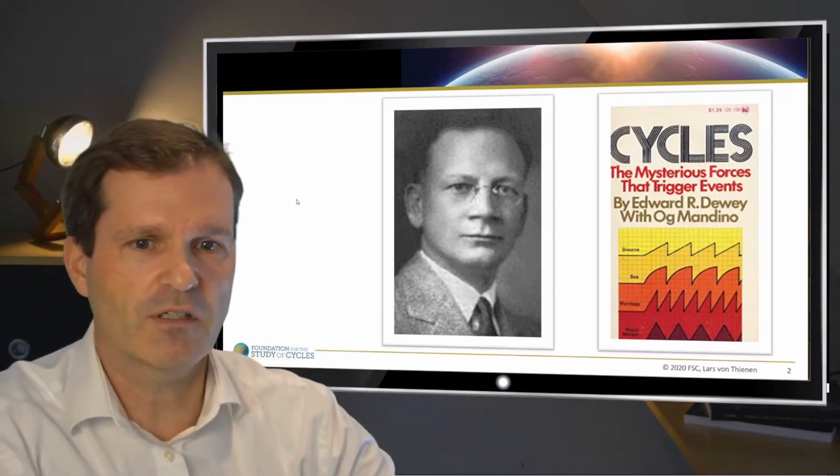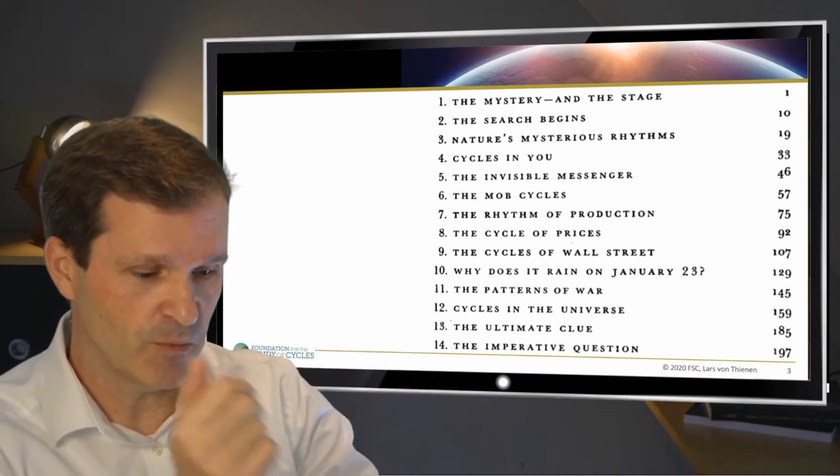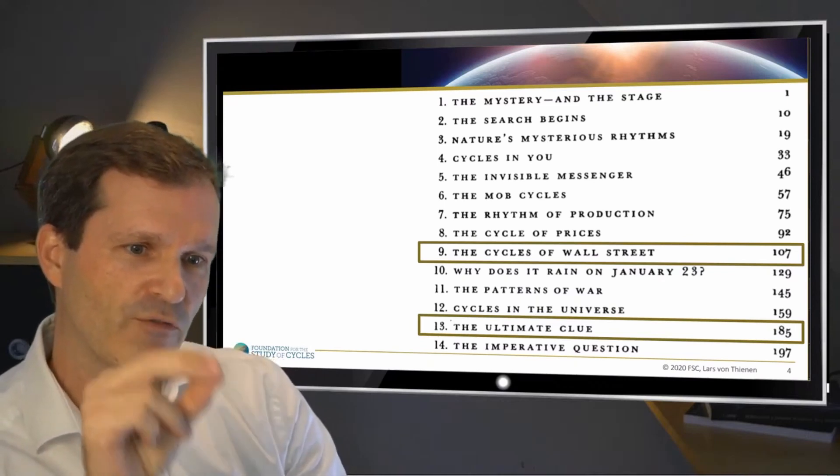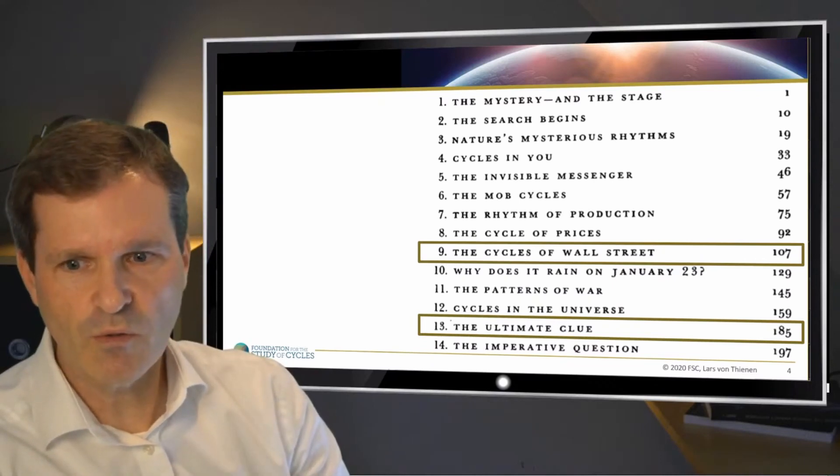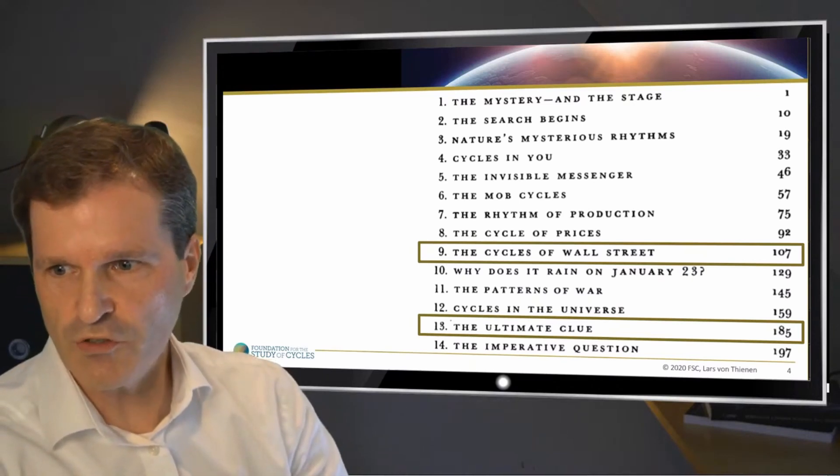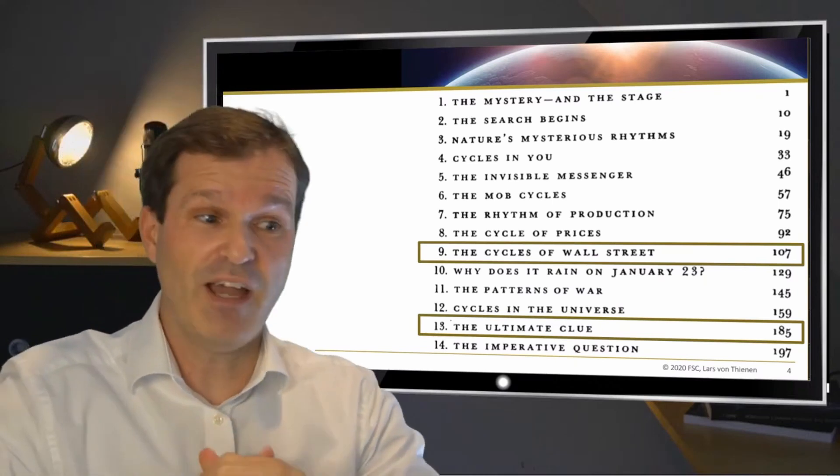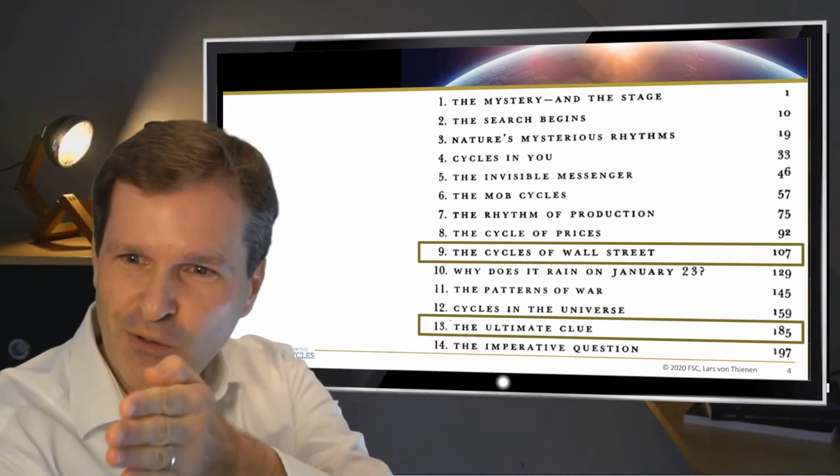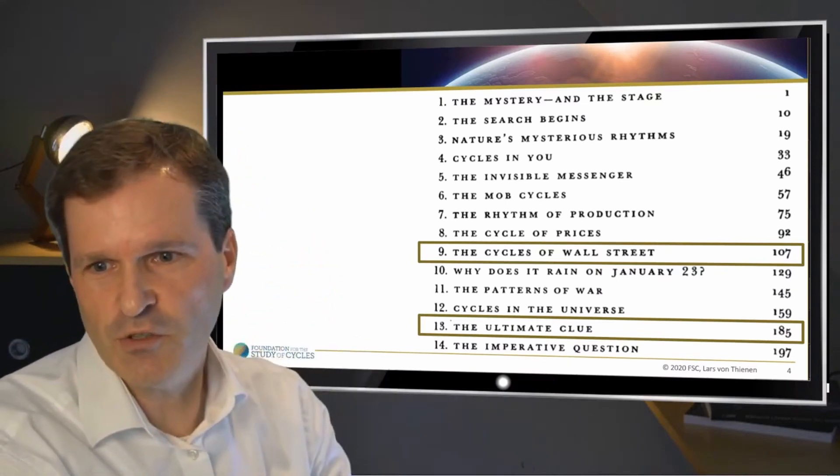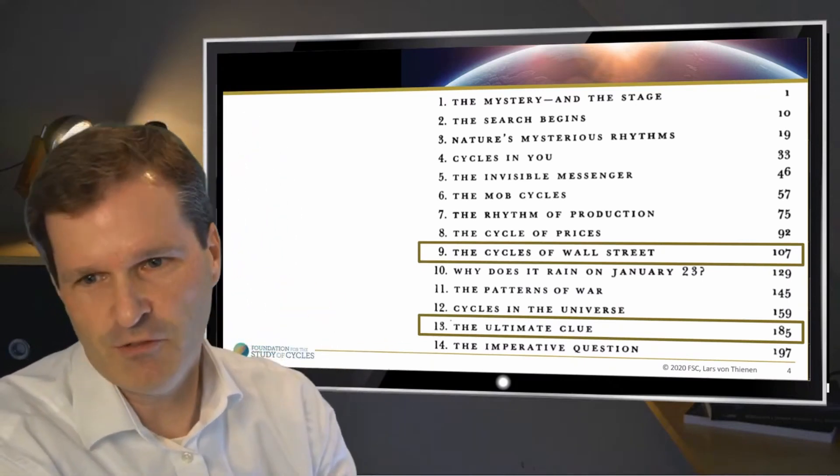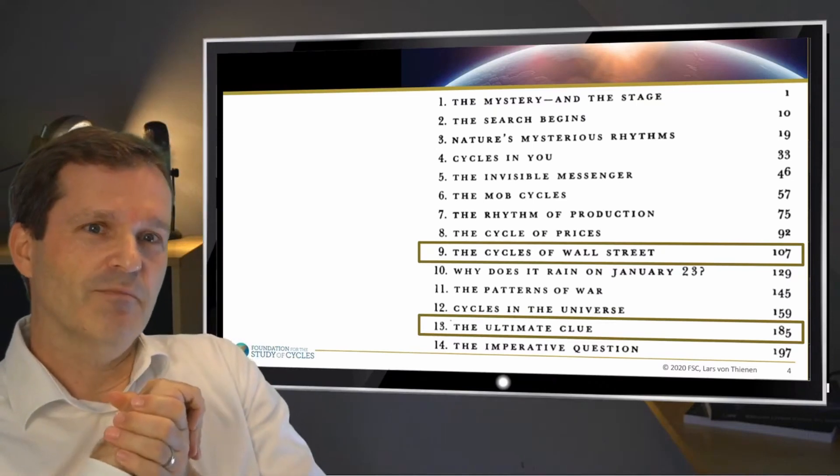Let's get started. The first important topic is about the agenda of this book, which is quite large. This is just the overview of what's in this book. I want to get two snippets: the first is about chapter nine, the cycles of Wall Street. What are the cycles of Wall Street and what's in this content?